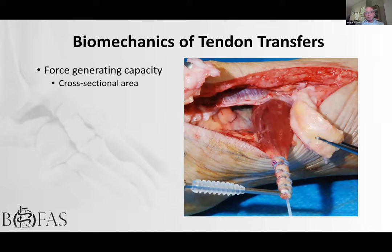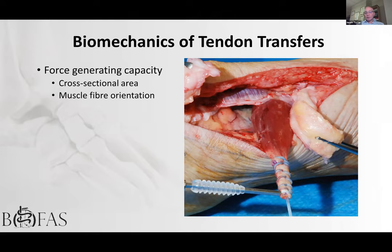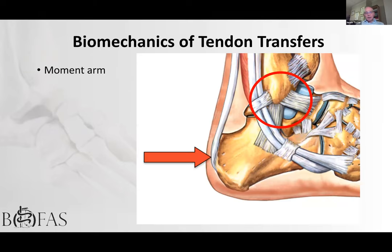Force generation is calculated partly from the cross-sectional area of the muscle. FHL is a strong, beefy muscle well suited to augmenting the Achilles. FHL also has favorable fiber orientation — the striations run longitudinally, in line with the tendon pull, so as the muscle contracts you get a line of pull closely aligned with the tendon, generating more power for the volume of muscle available.